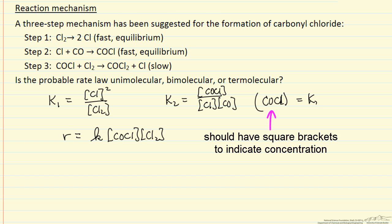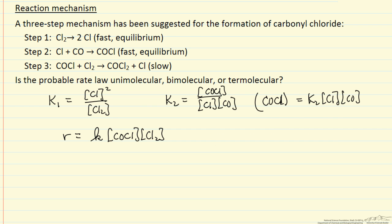It's equal to K2, the chlorine concentration, the CO concentration. And we can solve here for the concentration of chlorine in terms of measurable quantities, so that's K1 times concentration of chlorine molecule all to the one half power.